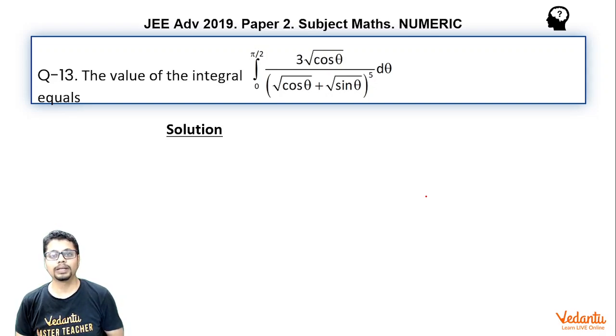So this is a numerical type question where you have to answer by typing in the value. Now, seeing this question, the first thought that may come to mind is to use property of definite integration. You may use property 4, property 6, especially property 6 given that one of the limits is 0. And what's that property?